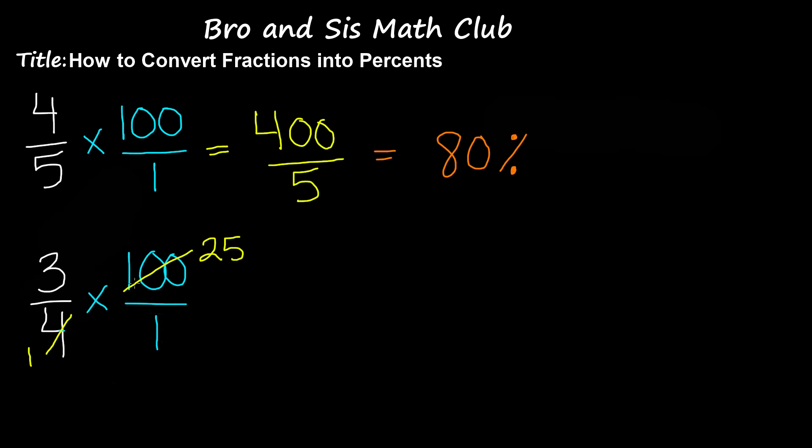Now, none of the numbers can be further simplified, so we're going to go ahead and multiply. We're going to multiply 3 by 25, which gives us 75. Now we multiply 1 by 1, which gives us 1. We know that any number divided by 1 is that number. So 75 divided by 1 is 75, which is also 75%. So this is how you convert fractions into percents.